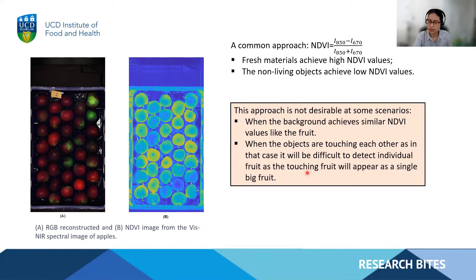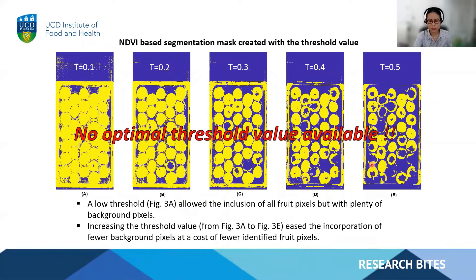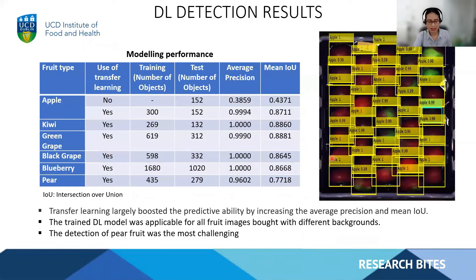Another situation is if objects are touching each other. As we can see, these two apples are touching, and after segmenting we would consider them as one object, which is not what we want — we want to identify individual fruits. Here I present the NDVI-based segmentation mask using different threshold values from t=0 to t=0.5. With a low threshold, backgrounds are also segmented; with a higher threshold, some apples cannot be identified. Unfortunately, there is no optimal threshold value, which is exactly why we want to use deep learning to identify and localize each fruit.